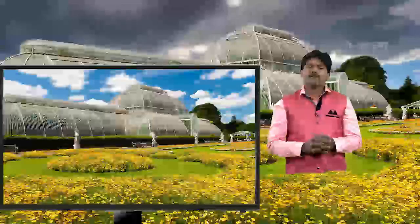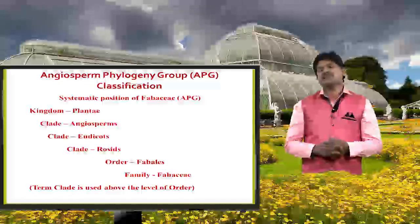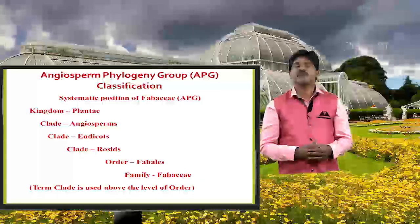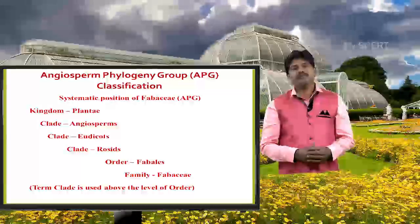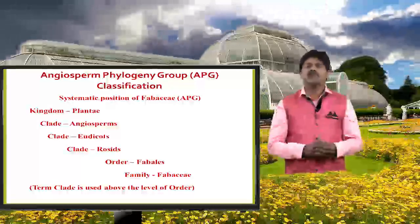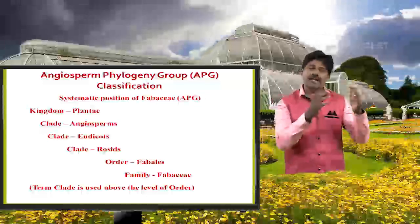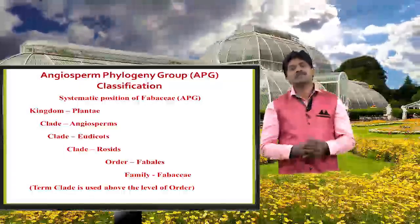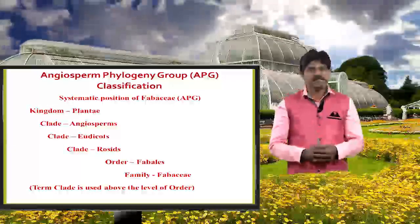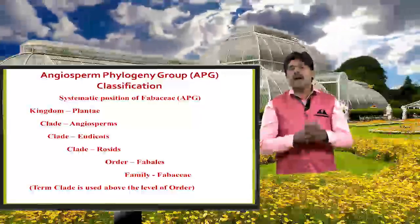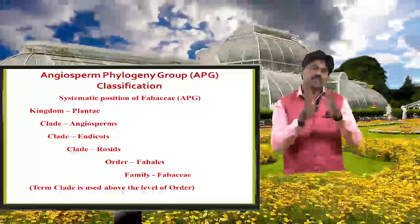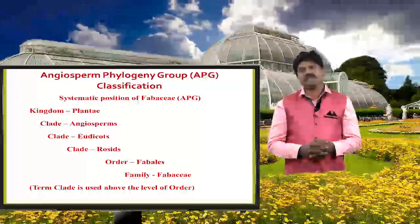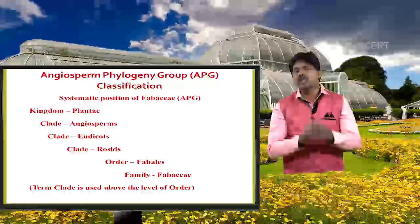The systematic position of Fabaceae in APG: Kingdom — Plantae; Clade — Angiosperm; Clade — Eudicot; Clade — Rosids; Order — Fabales; Family — Fabaceae. One important point to note: above the order level, the term 'clade' is used, compared to the previous classification system.